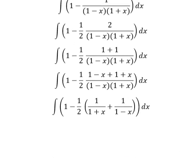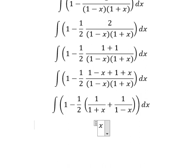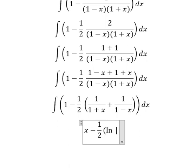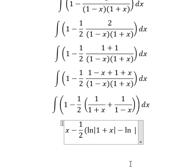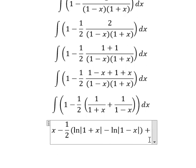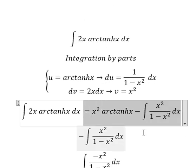So the integration of 1 is x. The integration of 1 over 1 plus x is ln of the absolute value of 1 plus x, and the next one is negative ln of the absolute value of 1 minus x, and I will add the constant C.